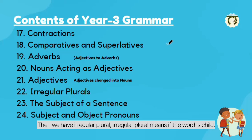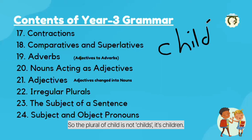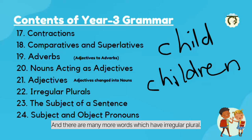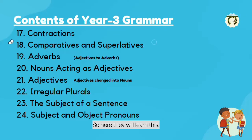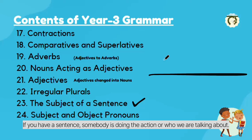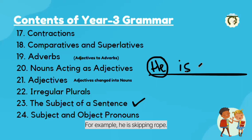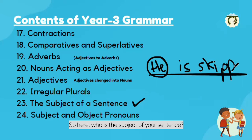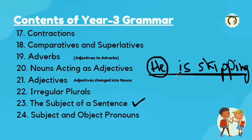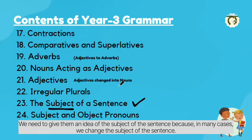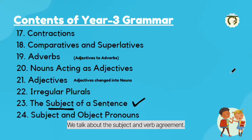Then we have irregular plurals — meaning if the word is 'child', the plural is not 'childs' but 'children'. There are many more words with irregular plurals and here they will learn these. The subject of a sentence is also a very important topic. In a sentence there is somebody who is doing the action or who we are talking about — for example, 'he is skipping rope', so 'he' is the subject. We need to give kids the idea of the subject because in many cases we talk about subject-verb agreement and many things are related to the subject.